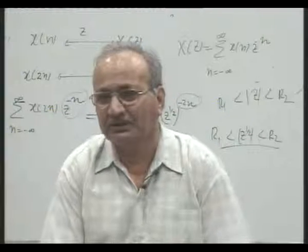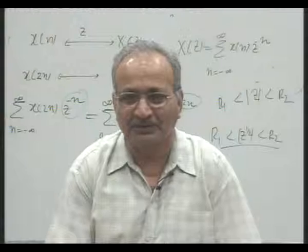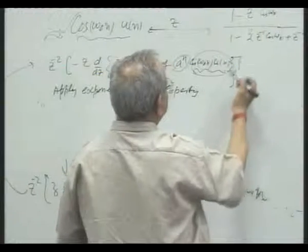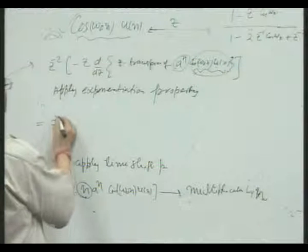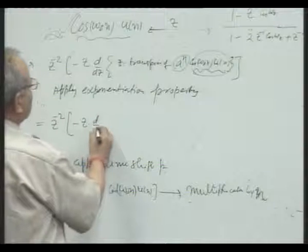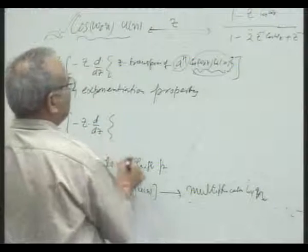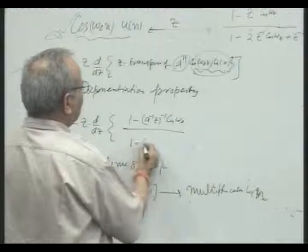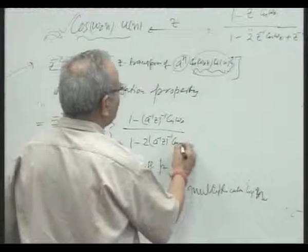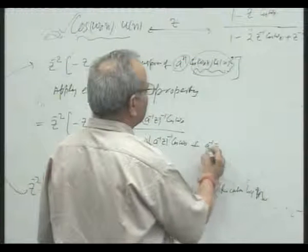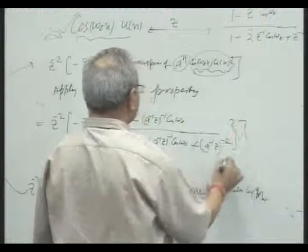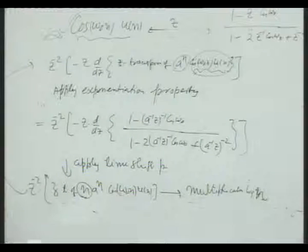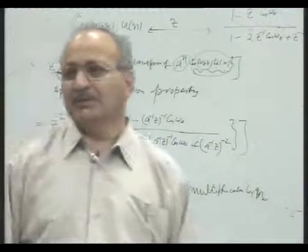We will continue our discussion on z-transform in a subsequent lecture. Each z gets replaced by A inverse z. So this z-transform becomes a function involving minus z times dX/dz, and this becomes 1 minus A inverse z inverse cosine omega naught, upon 1 minus 2 A inverse z inverse cosine omega naught plus A squared z raised to power minus 2. You simplify this and you get the z-transform of such a complicated figure directly by using the properties of z-transform, without any direct computation.